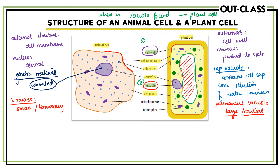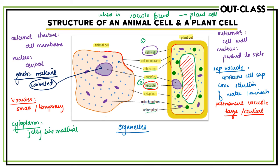Another structure found in both animal and plant cells is the cytoplasm. The cytoplasm is the jelly-like material that holds all the organelles inside — organelles being structures like ribosomes, the nucleus, vacuoles, mitochondria, and chloroplasts. All these organelles are suspended within the cytoplasm, and the cytoplasm is found in both animal and plant cells.